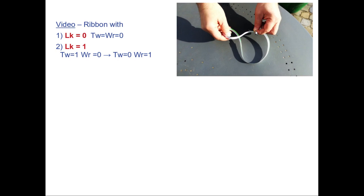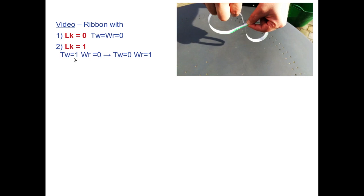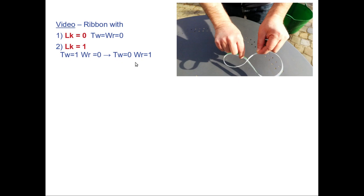The writhe is equal to one here because I have one self-crossing, and the twist is equal to zero. In this case the ribbon here is not twisted — one face, the top part, is always facing upward colored green. So, starting from linking number zero (twist zero, writhe zero), then going to linking number one (twist one, writhe zero), I can transform it — by keeping it sealed — into a state where twist is zero and writhe is one.